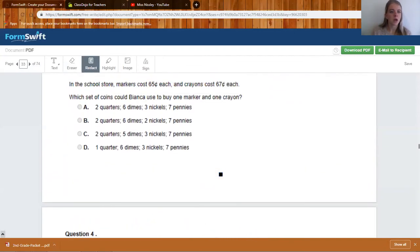Question three. In the school store, markers cost 65 cents each and crayons cost 67 each. Which set of coins could Bianca use to buy one marker and one crayon? First, you have to add 65 plus 67. When you do that, you should get $1.32 cents. Now we have to go through each of these and figure out which one equals one dollar and 32 cents. So for A we have two quarters, six dimes, three nickels, and seven pennies. Two quarters is 50 cents, plus six dimes is one dollar and 10 cents, plus three nickels is one dollar and 25 cents, plus seven pennies is one dollar and 32 cents. We don't even have to do the rest because we know that is the correct answer. Yay!